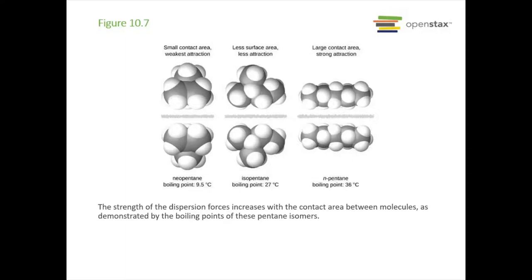Here are some examples. Every single one of these compounds has the same formula and molecular mass — they're all C5H12. These are isomers of each other: same formula, different configuration. n-Pentane at the far right has the highest boiling point because it has more contact area. Isopentane has a lower boiling point with less surface area than n-pentane but still more than neopentane, which has the smallest contact area and the weakest attraction between molecules.